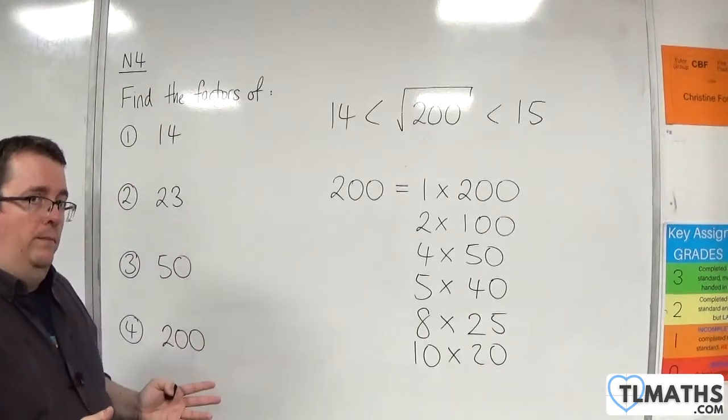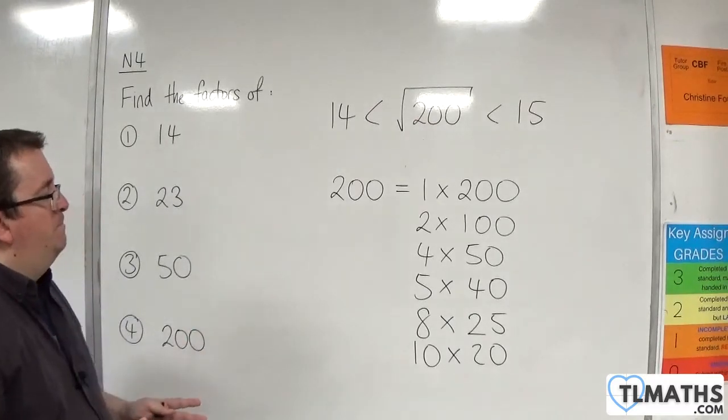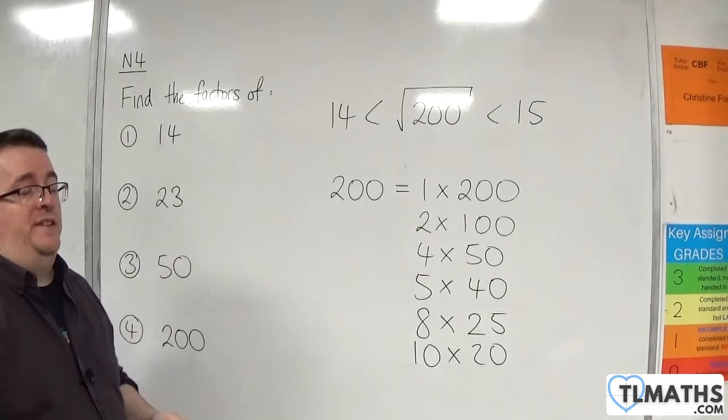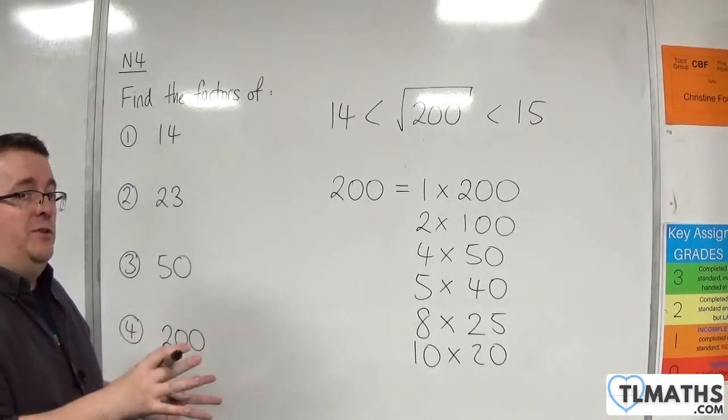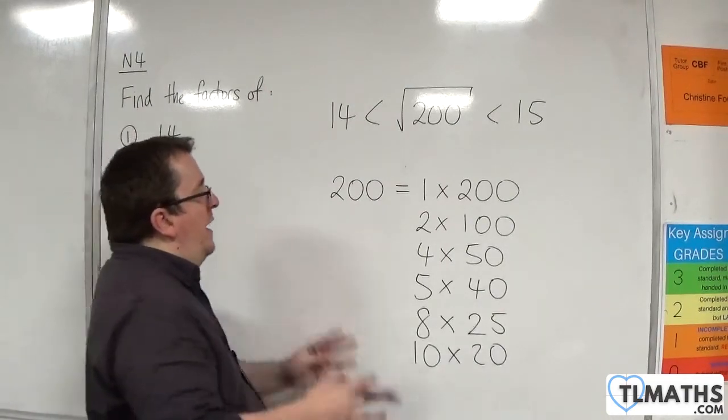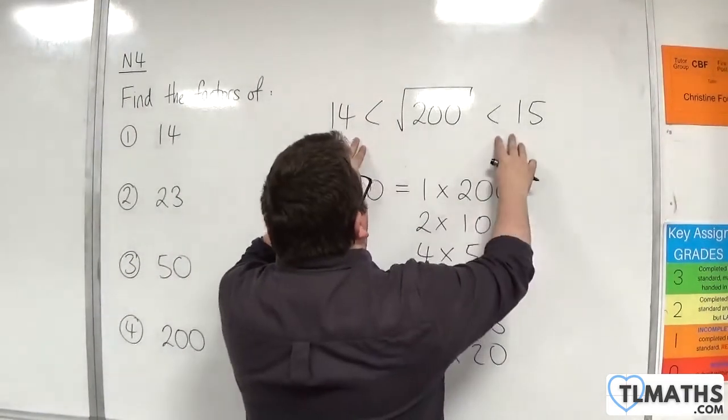13 won't go in. You can test it if you like. 14 won't go in because 7 didn't go in. Because 14 is 2 times 7, one of its factors failed, so 14 can't go in either. And that is as far as I would need to go.